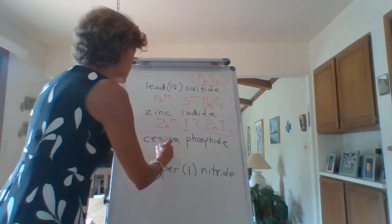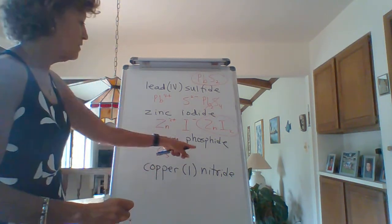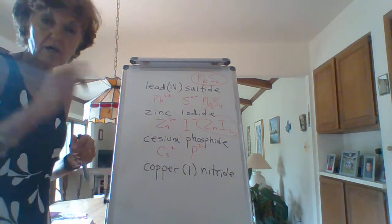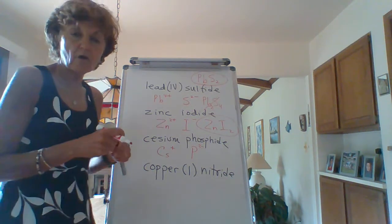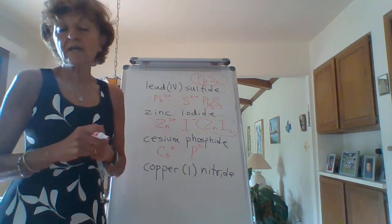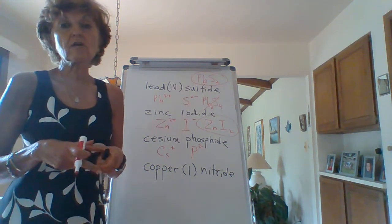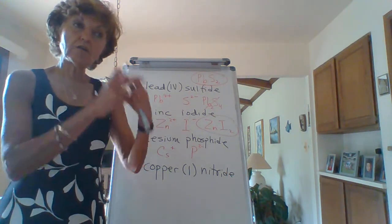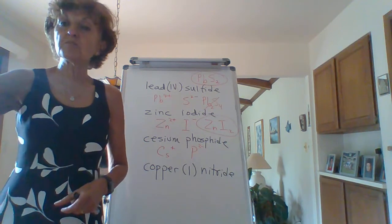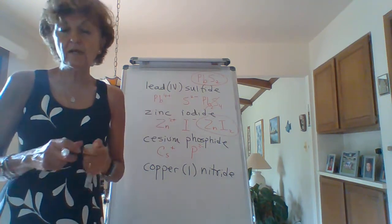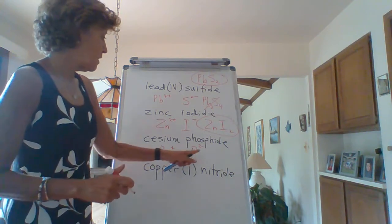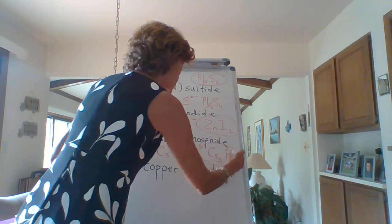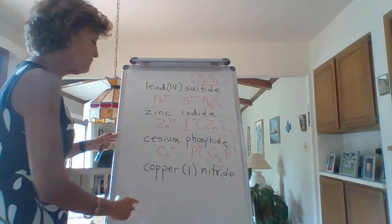Okay, cesium phosphide. Cesium is a group 1a metal plus one. Phosphide is P three minus because nitride, phosphide, arsenide are all group 5a. Best way you guys can practice these is to just create little index cards with all the different monoatomic ions and all of the cations, all of the anions. Just pick one from here, one from here, put them together and create some formulas for yourselves. Okay, crisscross. Cs3P. Okay, three comes down here, one comes here.